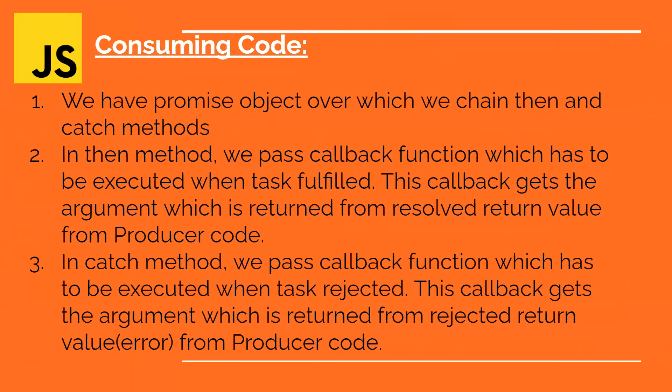Next is the consuming code. The consuming code means you have already created the promise object containing the time-consuming task, and now you will use that newly created promise object. Whenever you have a promise object, there are two things to note: you can apply the then and catch methods over it, and these methods can be chained again and again.